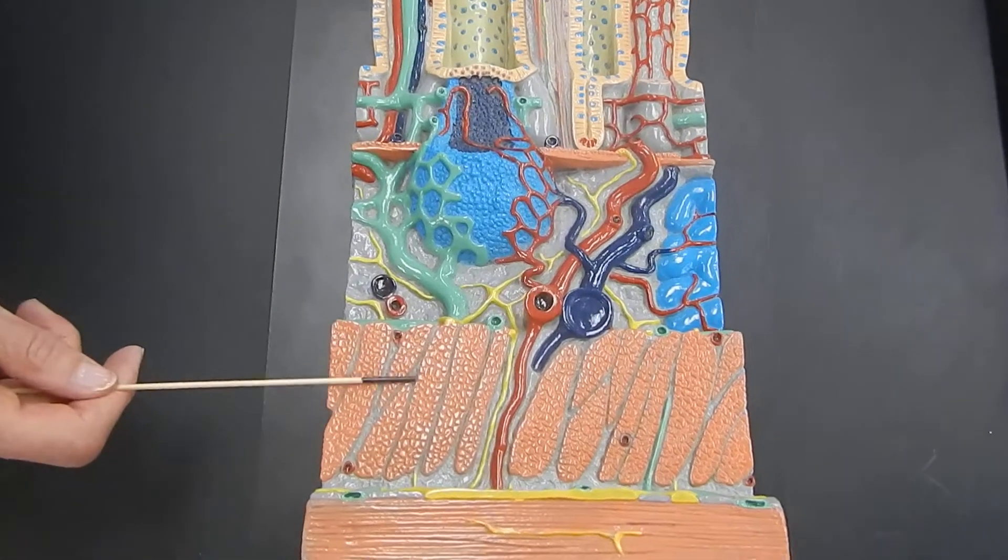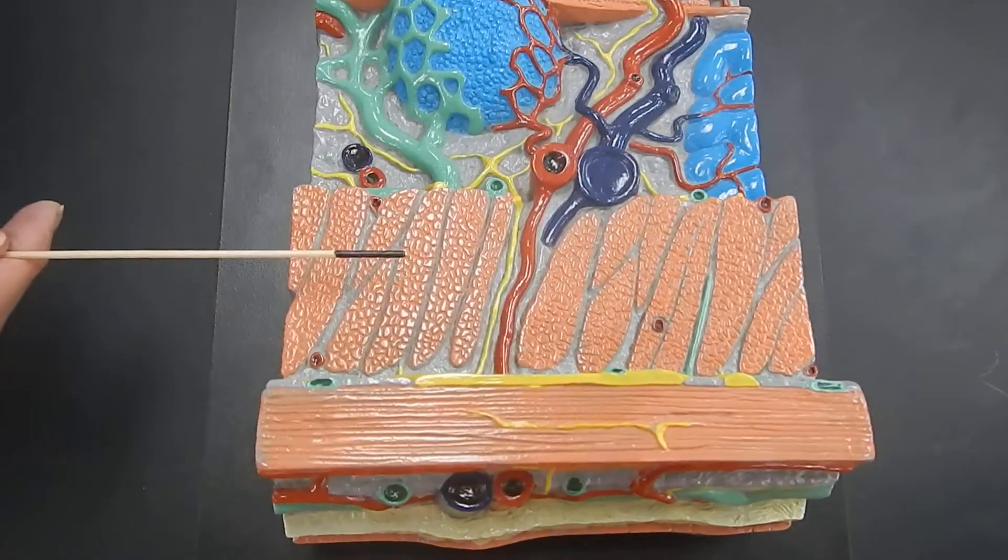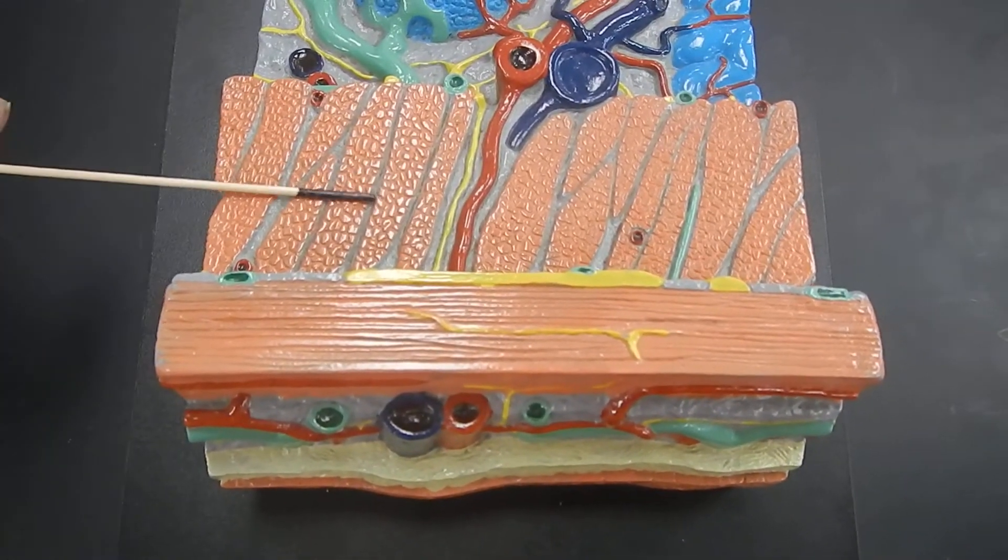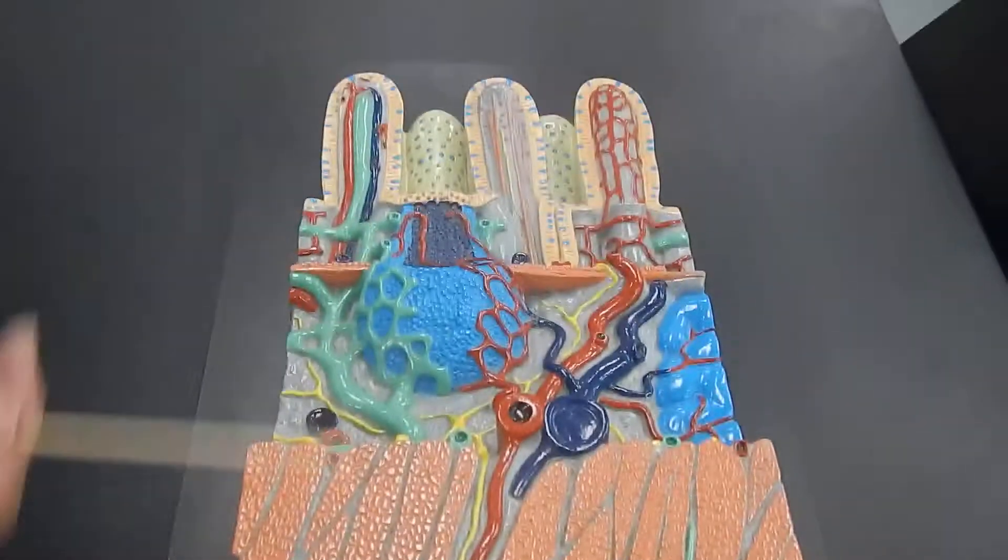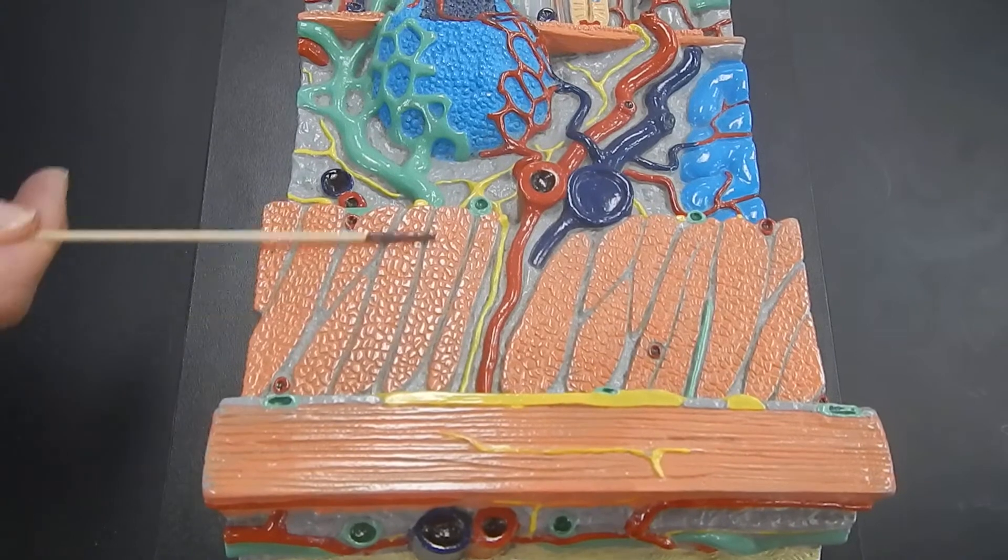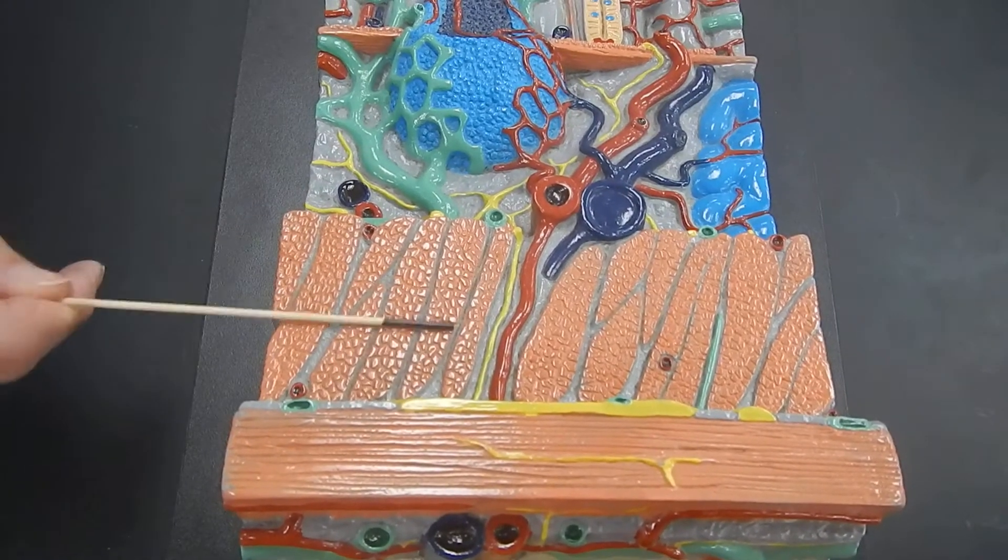Let's look down now at the muscularis. There are two layers of the muscularis. The layer that's closer to your food, we call this the inner layer. The inner layer is circular. So you can see that we have cut across muscle fibers.